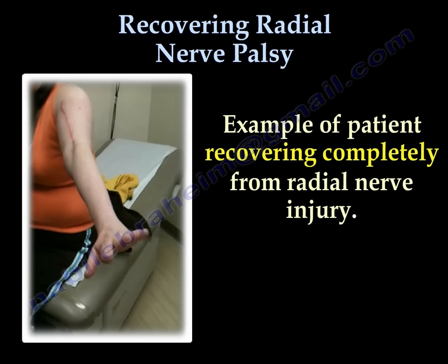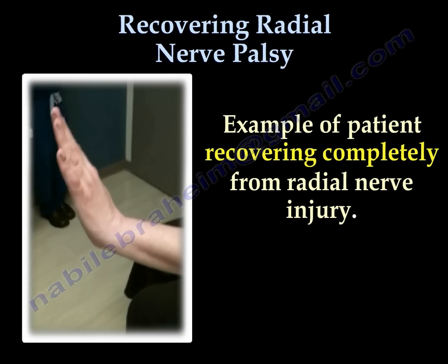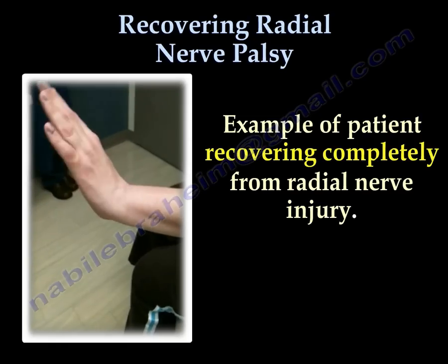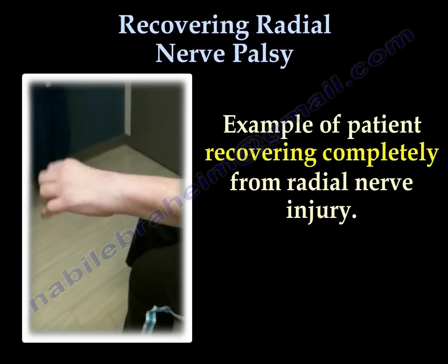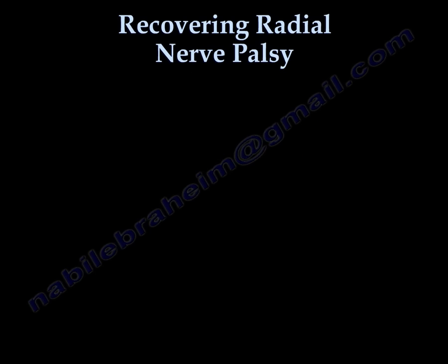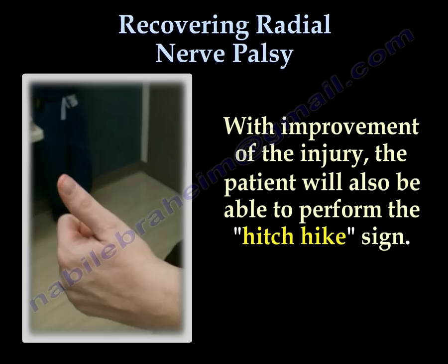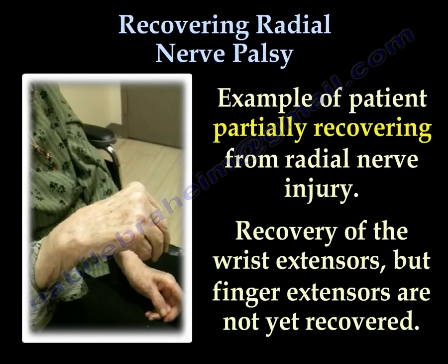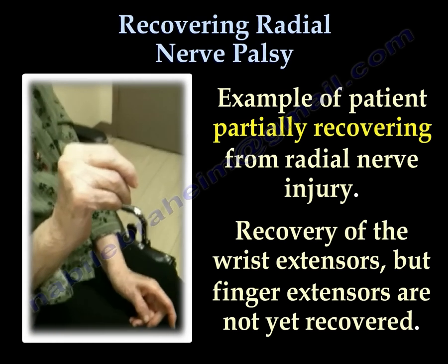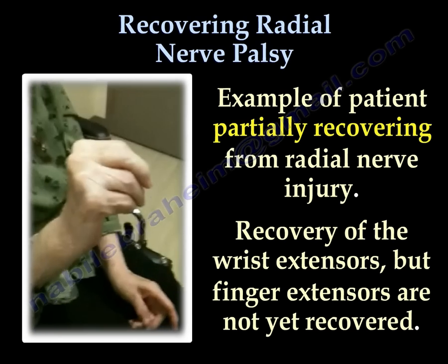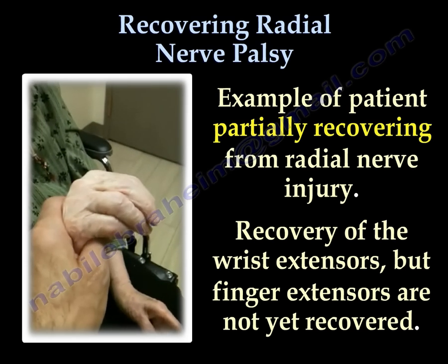This is an example of a patient recovering completely from radial nerve palsy. The patient regained extension of the wrist and fingers and was able to hitchhike. This is an example of a patient partially recovering from radial nerve injury — you can see recovery of the wrist extensors, but finger extensors are not yet recovered.